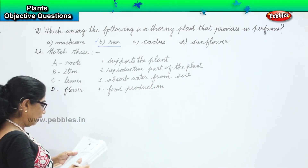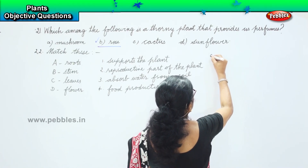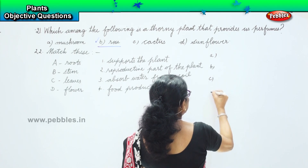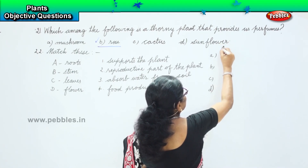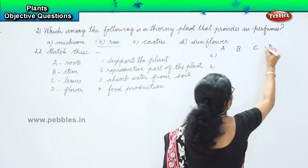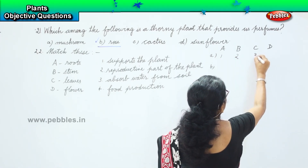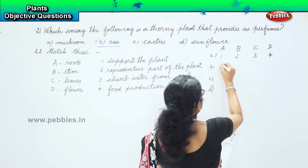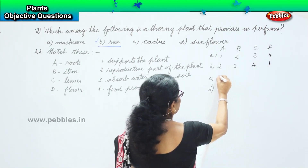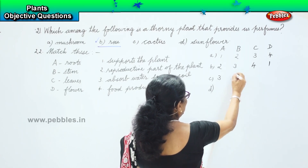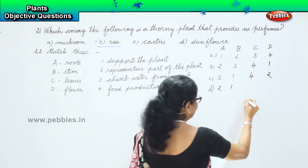We have four items to match. The answer options are: first option 1,2,3,4; next option 2,3,4,1; next 3,1,4,2; and the last one 2,1,3,4.